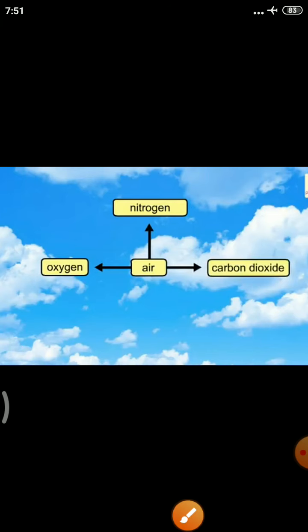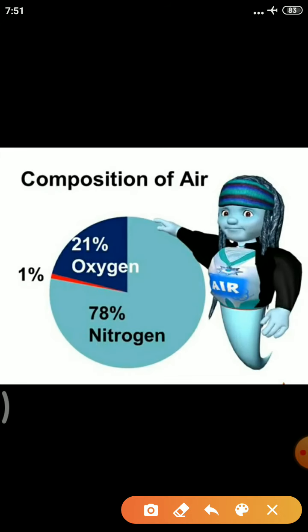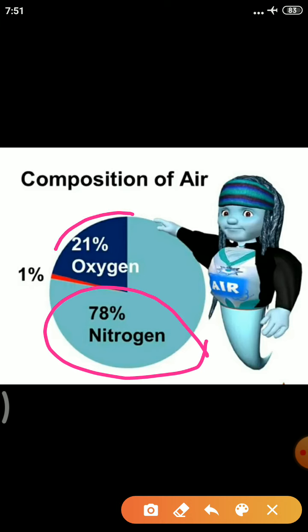Now see its composition. Air contains 78% nitrogen, 21% oxygen, and 1% carbon dioxide. This is the composition of air. You have to understand it.